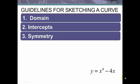Let's take the function y equals x to the fourth minus 4x. First, for the domain, we see that we have a polynomial function, so the domain is going to be all real numbers. We would look for excluded values if we had a rational function, a natural log, or things like that.